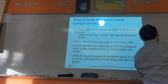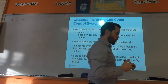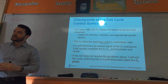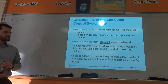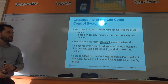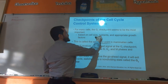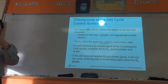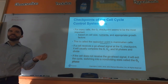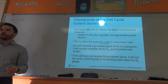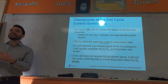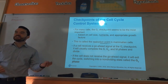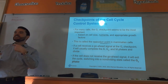G1 is also called the restriction point — because if you make it past G1, you're probably going to divide, so it's the main point restricting which cells divide or not. Nutrients are another G1 checkpoint factor: you need enough nutrients in the cytoplasm for the new cell to survive on its own after division.